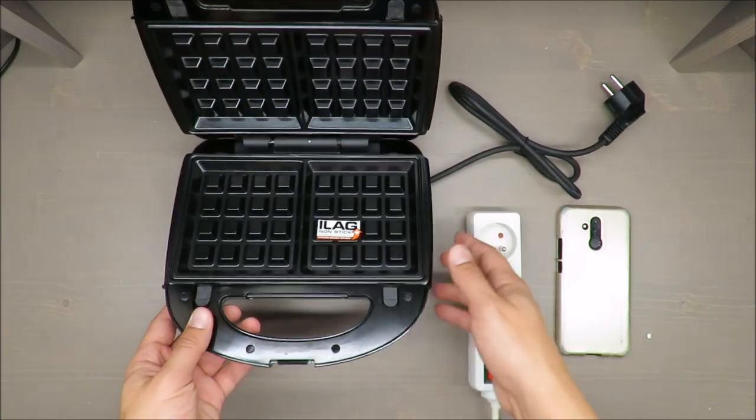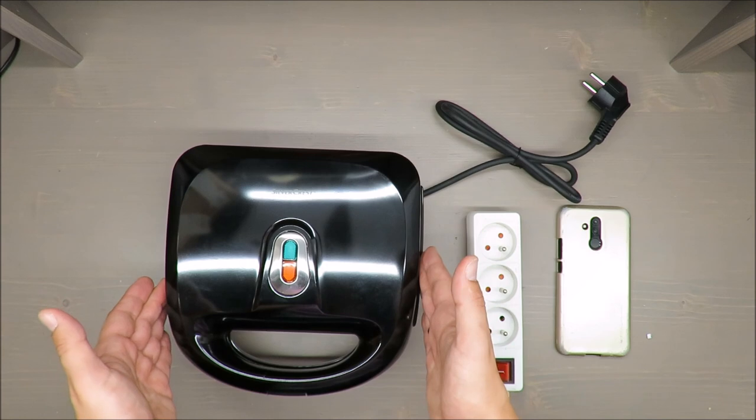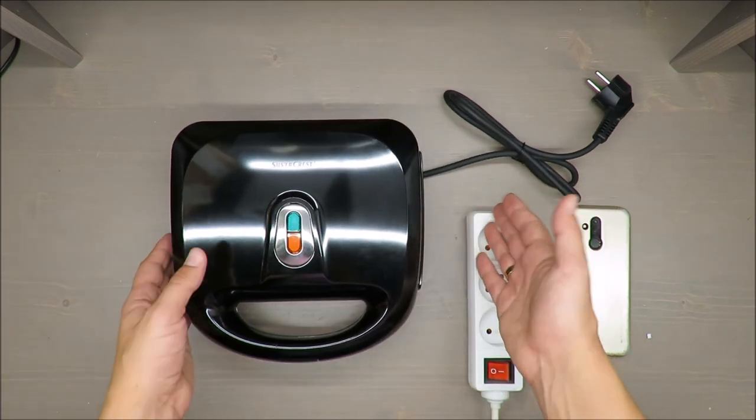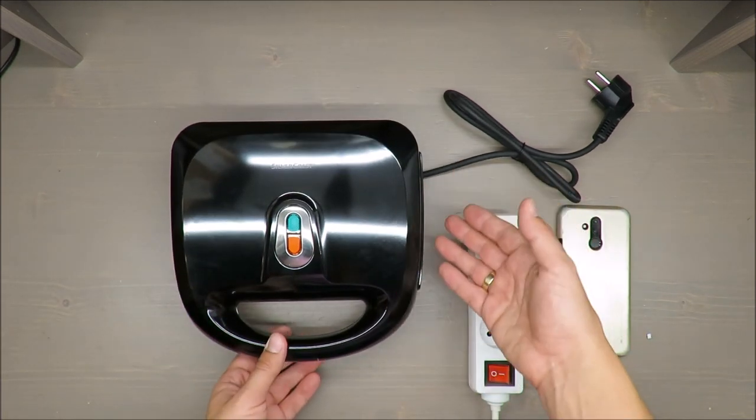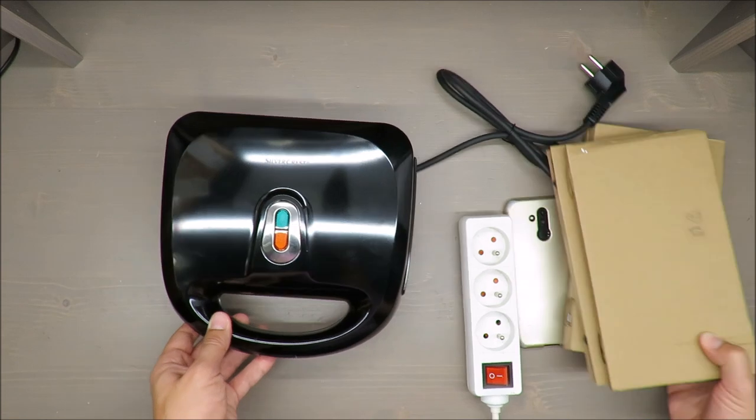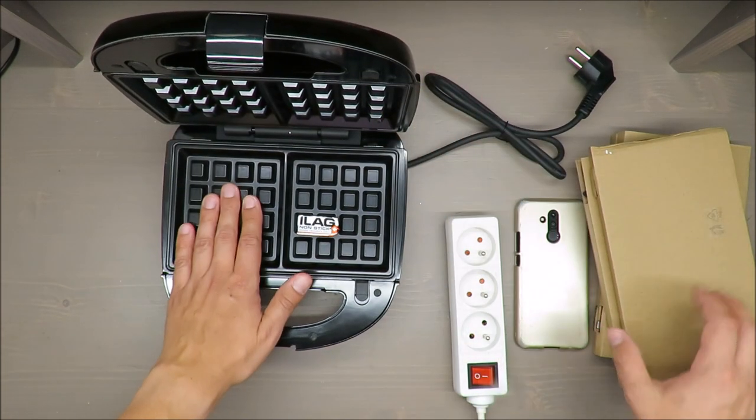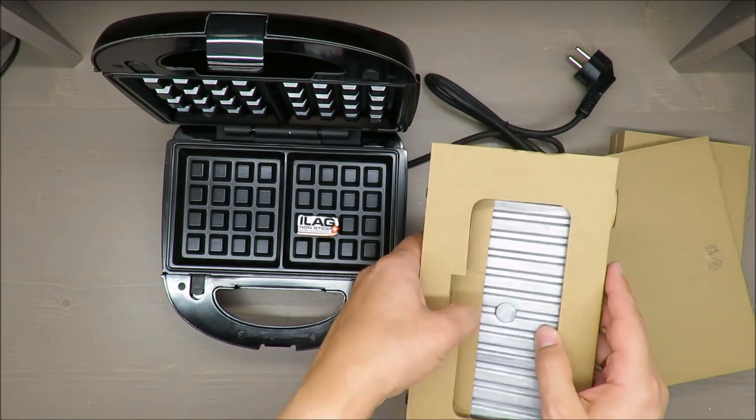My judgment is that it's okay because for a small amount of money you're getting a toaster, waffle maker, and contact grill. You're equipped with spare parts: this is for waffles, this is for contact grill, and also for sandwiches.